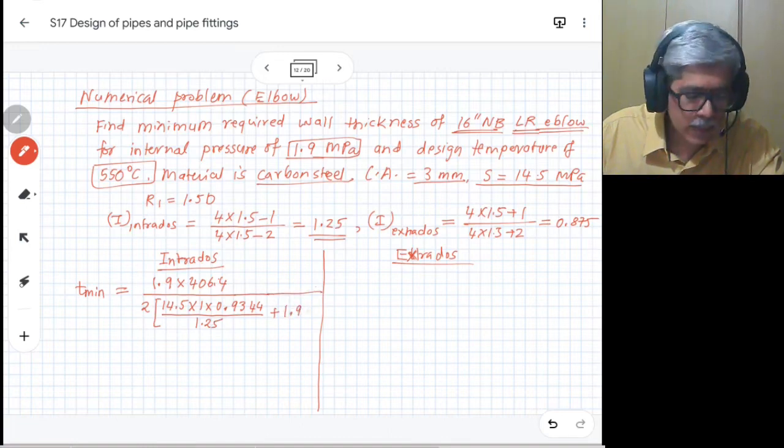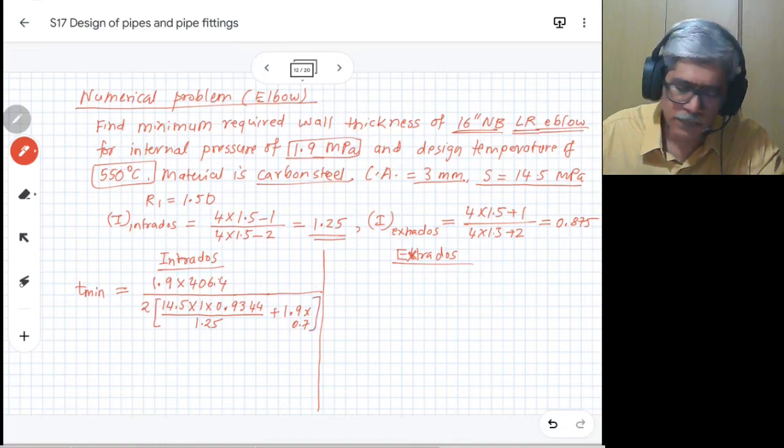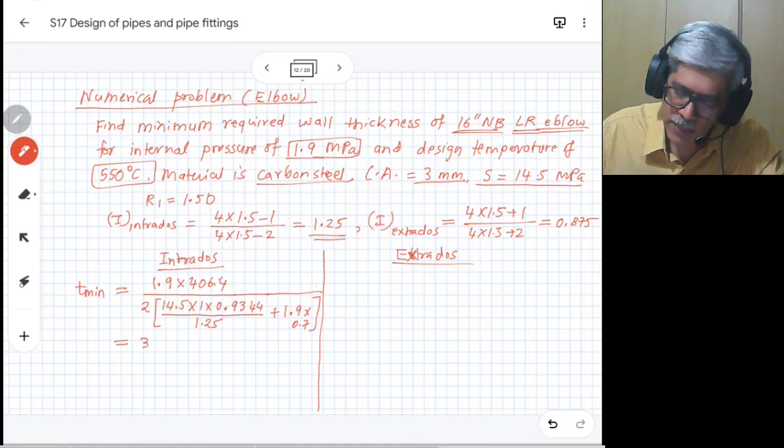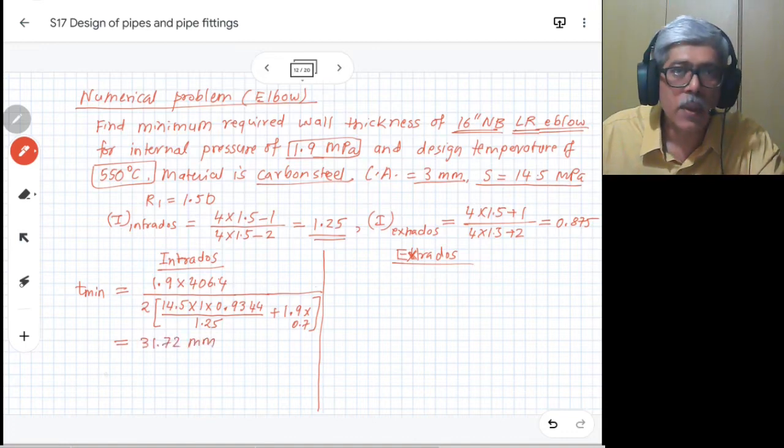Plus pressure into Y factor, that is 0.7. So that gives us the minimum thickness as 31.72 millimeters.